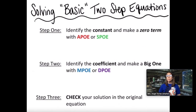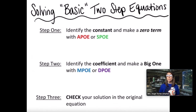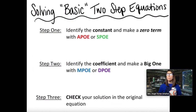To briefly summarize: to solve a basic two-step equation with two terms, step one is to identify the constant and make a zero term with APO or SPO. Step two is to identify the coefficient and make a big one using MPO or DPO. Once you have fully isolated x, check your solution to make sure that it's true. That's it for today's lesson — I will see you next time.